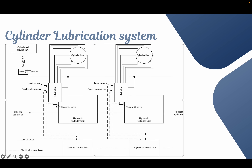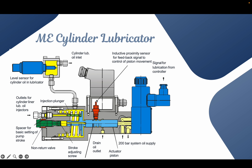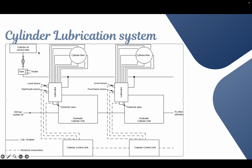Before understanding Alpha Lubrication, we should first understand the basic outline. This is the Alpha Lubricator. This is the cylinder oil service tank and this is the individual unit of a cylinder liner, and this is the quill. This Alpha Lubricator, when it pumps oil, will inject two quills into the cylinder liner. This lubricator is basically operated by a solenoid valve which is getting a signal from the CCU. In synopsis, the CCU will provide a signal to the solenoid valve, based on which the lubricator will activate and inject oil inside the cylinder liner through the quills.